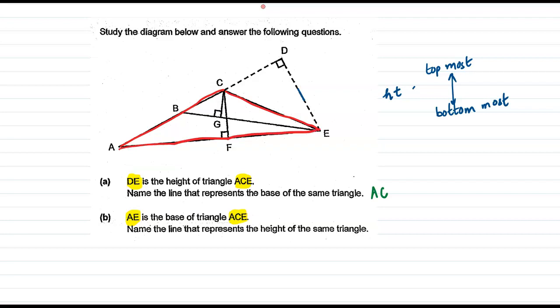And we have been told that AE is taken as the base, so I will shade it with blue. So AE is the base. Now if in this triangle we have taken AE as the base, the topmost point has to be C. Now if we drop a perpendicular...